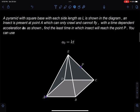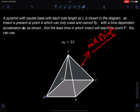Let's discuss this. The problem statement: If a pyramid with a square base with each side length as L is shown in the diagram, an insect is present at point A which can only crawl and cannot fly with a time-dependent acceleration a₀ as shown. Find the least time in which the insect will reach point P. This is given as a₀ equals kt, and this point P is at the midpoint here.